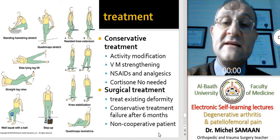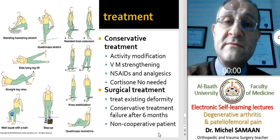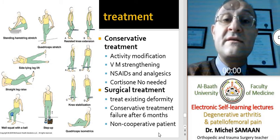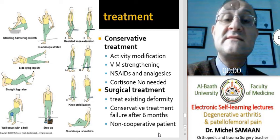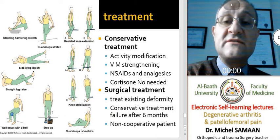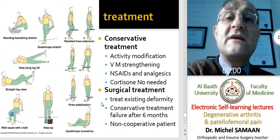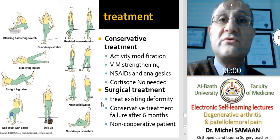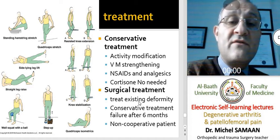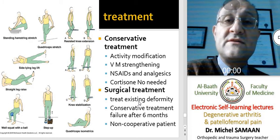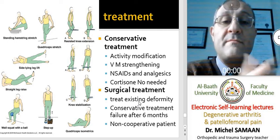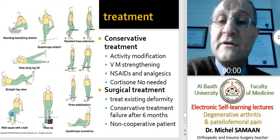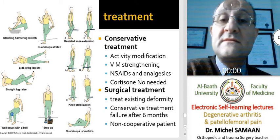The treatment of chondromalacia patella is important. As with all joint pain, the first approach is conservative: activity modification, strengthening of the vastus medialis to improve patellar motion, and use of non-steroidal anti-inflammatory drugs. Intra-articular cortisone injection is usually not needed, since the pain arises from subchondral bone congestion rather than synovitis. Surgical treatment is considered when conservative treatment fails after six months or the patient is non-cooperative. This picture shows the types of exercises a physiotherapist can use to strengthen the vastus medialis.